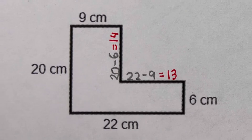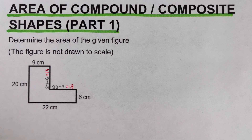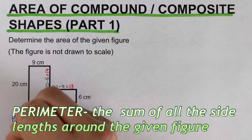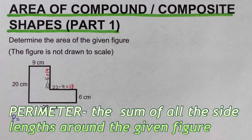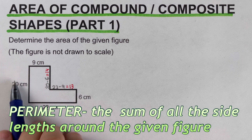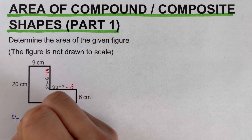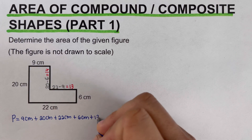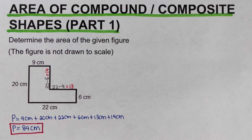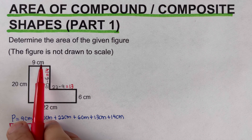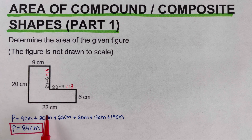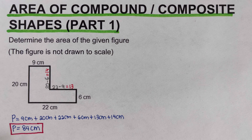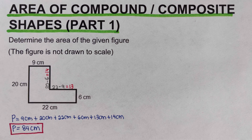Now we determine the perimeter. The perimeter is the sum of all the sides around the given figure, so we add all of them together. I added the 9, 20, 22, 6, 13, and 14, and the answer is 84 centimeters. So the perimeter of this compound or composite figure is 84 centimeters.